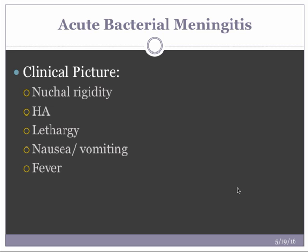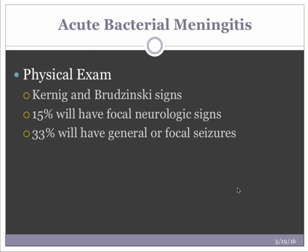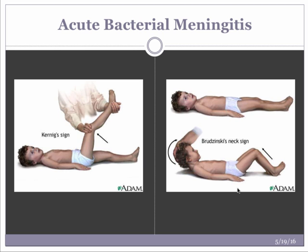Healthcare-associated bacterial meningitis is caused by staphylococci and aerobic gram-negative bacilli. The patient presents with nuchal rigidity, headache, lethargy, nausea, vomiting, and fever. On physical exam, Kernig's and Brudzinski's signs are positive; 15% will have focal neurologic signs and about 33% will have generalized or focal seizures. Kernig's sign: flex the hip to 90 degrees, extend the knee — pain indicates meningeal irritation, though it may also occur with herniated lumbar disc or spinal cord tumors.